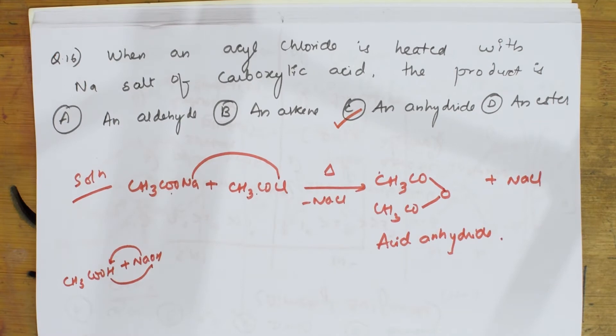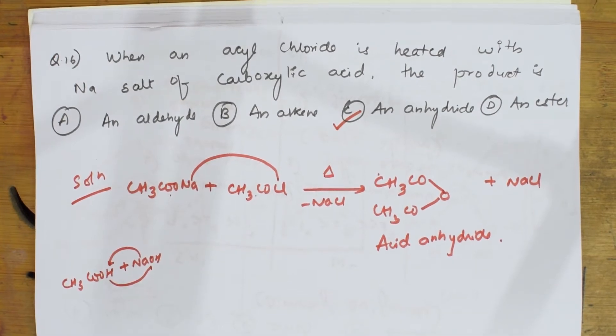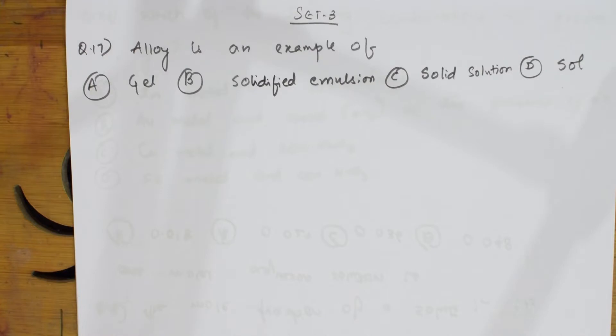Simple, students. So when acyl chloride is heated with sodium salt of carboxylic acid, the product formed is an anhydride. Let us come back and do the next question.